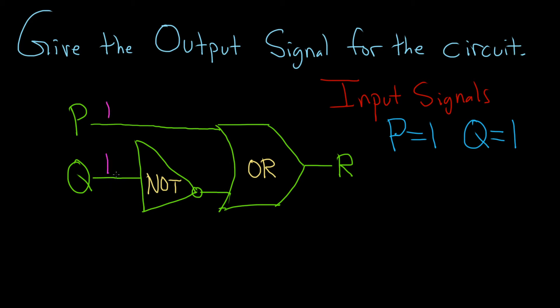Let's first work with Q because in order to go through this OR gate we do need to go through this NOT gate first. The NOT gate just basically negates the value. So when you enter with a 1 you come out with a 0.